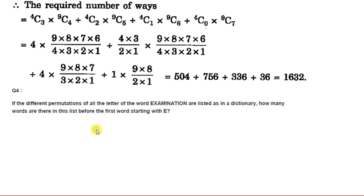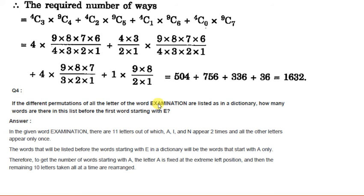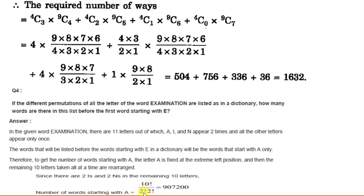There are 11 letters in EXAMINATION, out of which we have two A's, two I's, and two N's — these appear two times each, all other letters appear only once. To find the number of words starting with A, we fix A in the leftmost position. The remaining 10 letters can be arranged in factorial 10 divided by factorial 2 into factorial 2 ways (for the repeated I's and N's). After calculation, we get 9,07,200... that is 9,70,200.